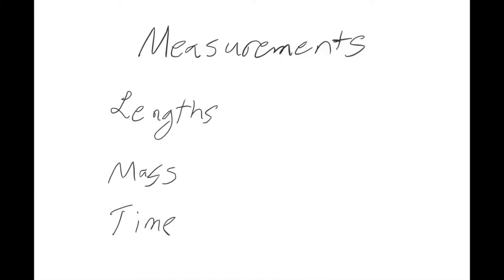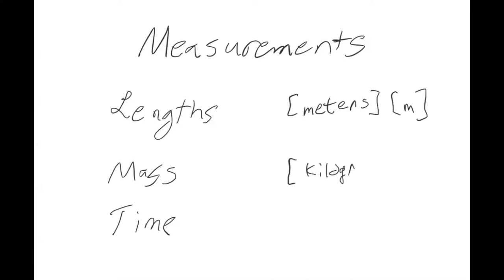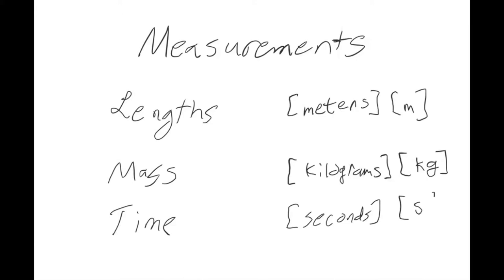The units we're going to use to measure lengths or distances — the base unit is going to be meters, which is a lowercase m. When you see me writing in square brackets, that is usually going to be a unit. For mass, we're going to use kilograms, which is a lowercase k and a lowercase g. And for time, we're going to use seconds, which is a lowercase s.